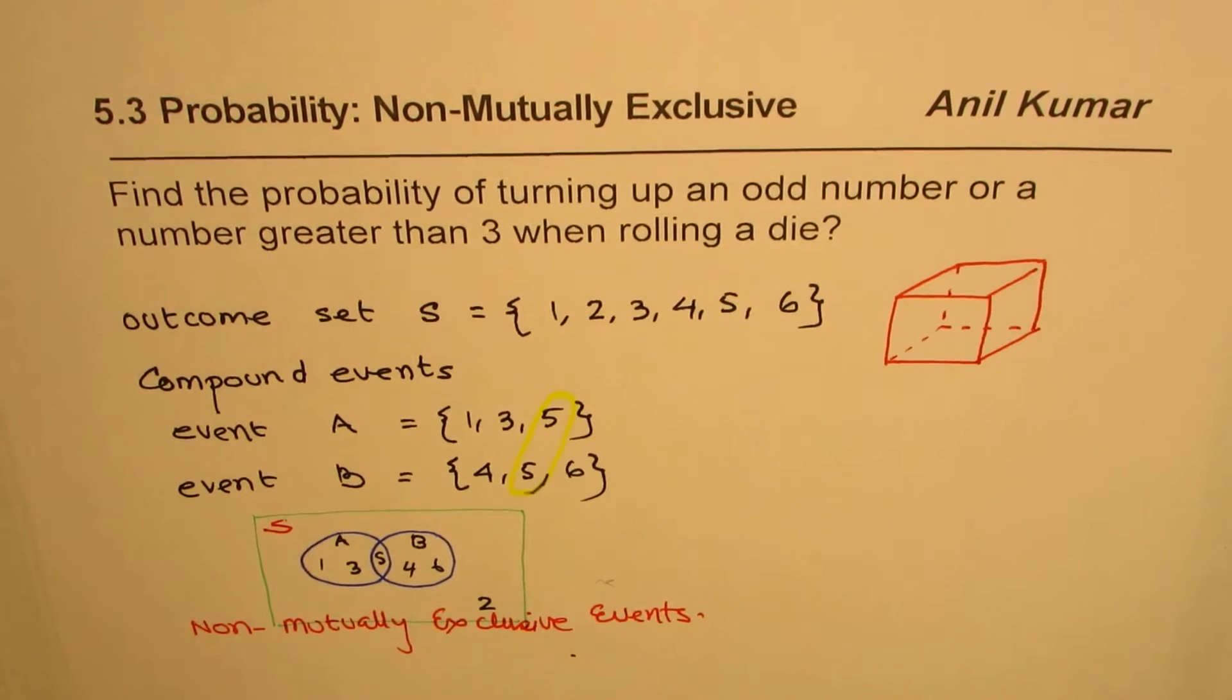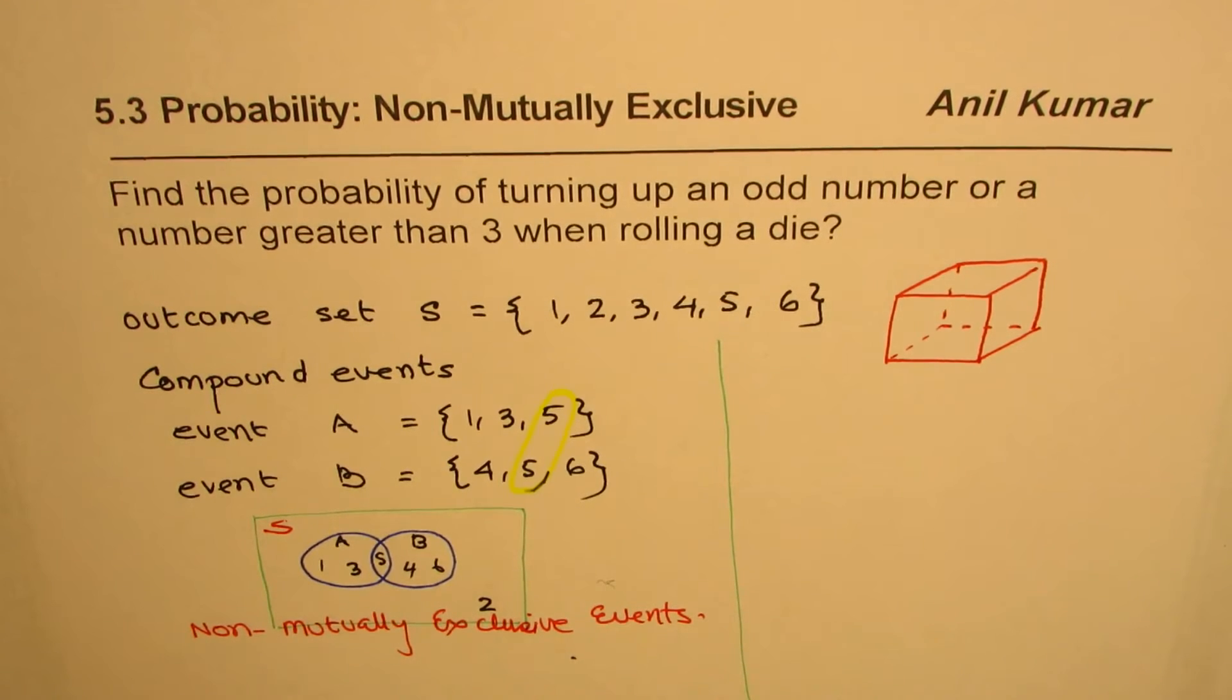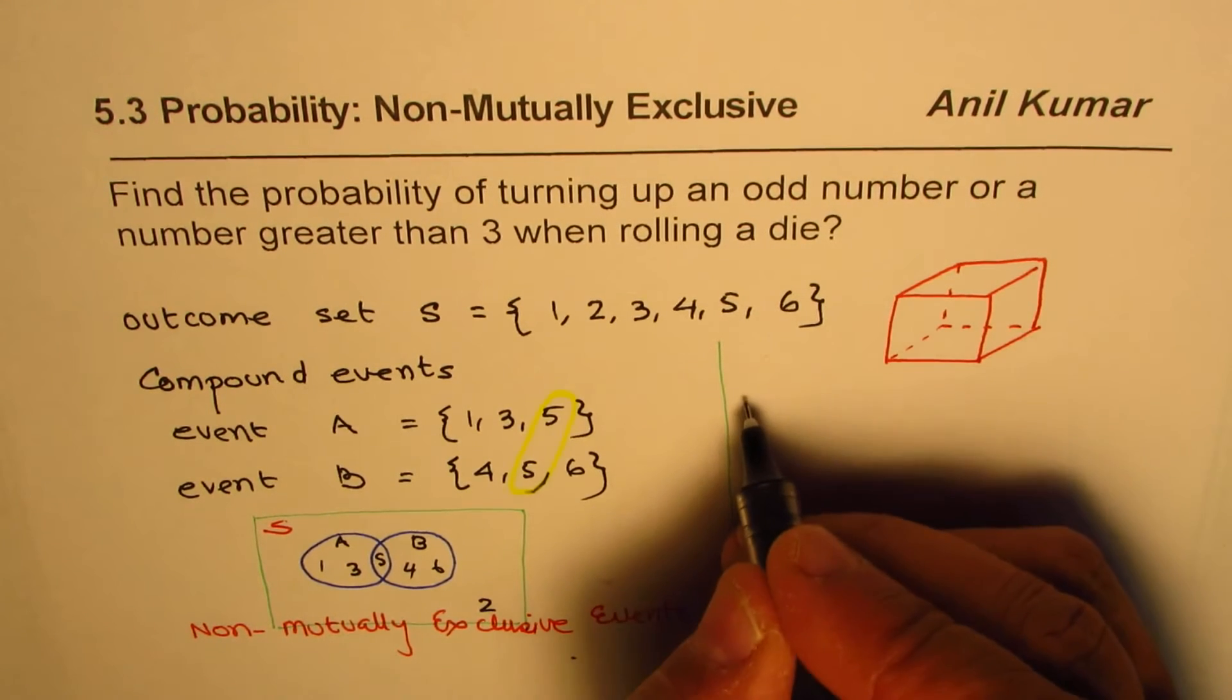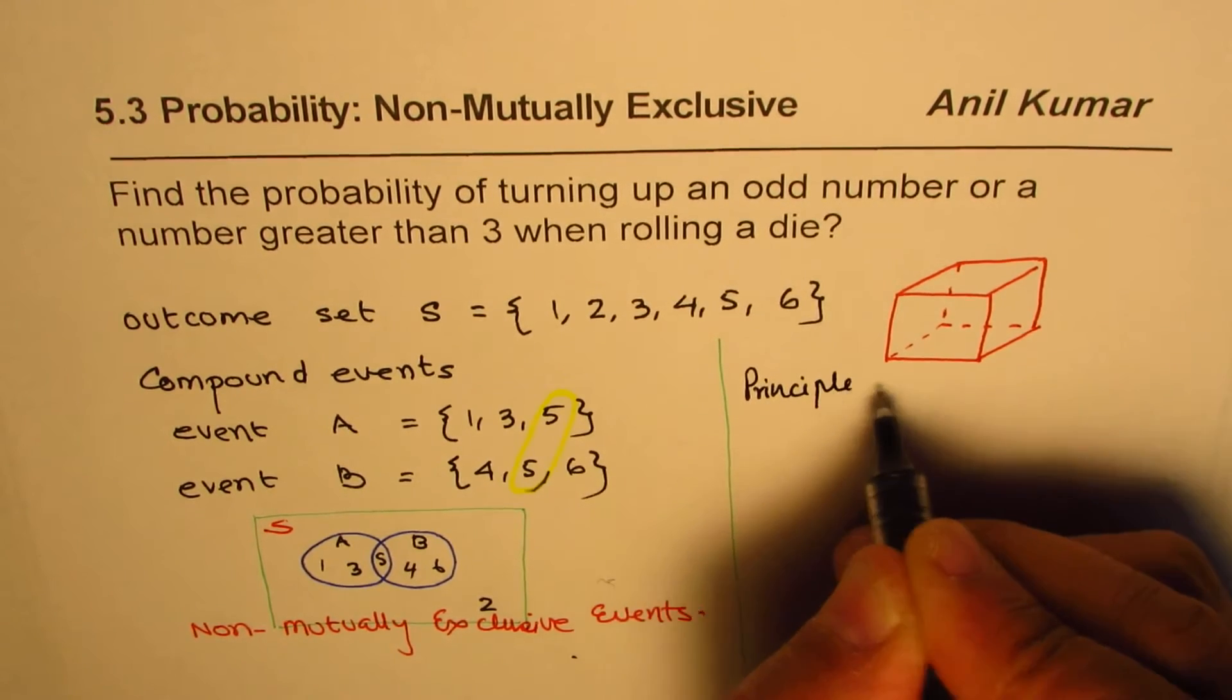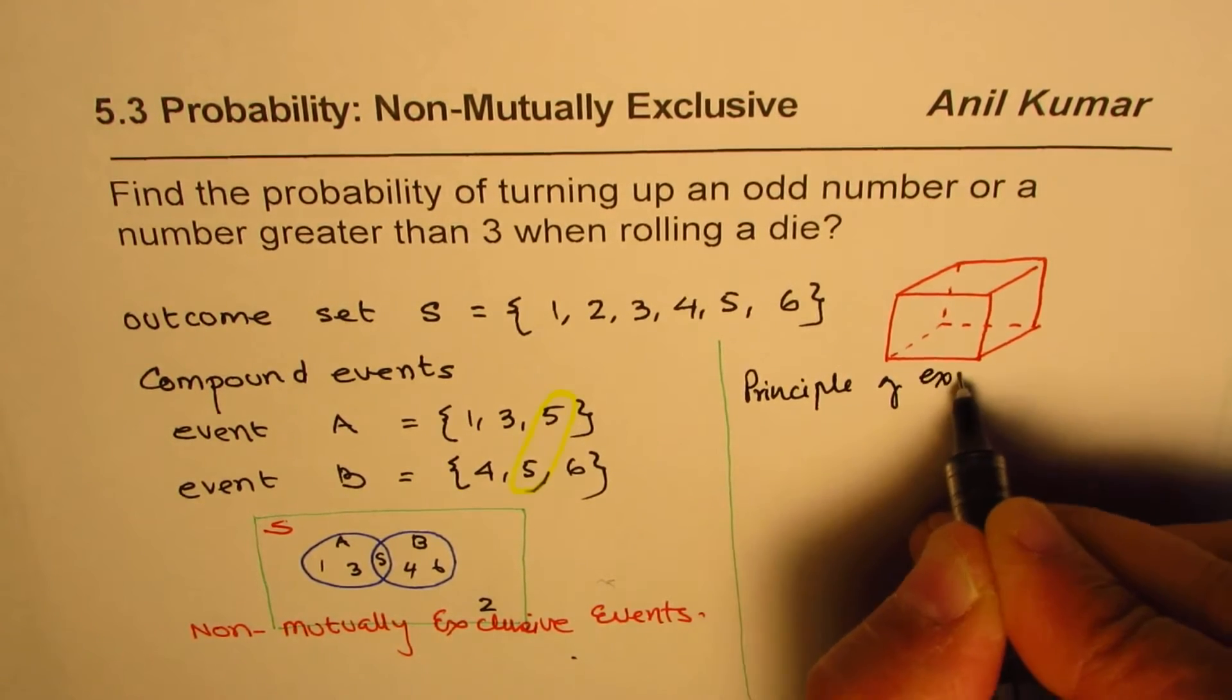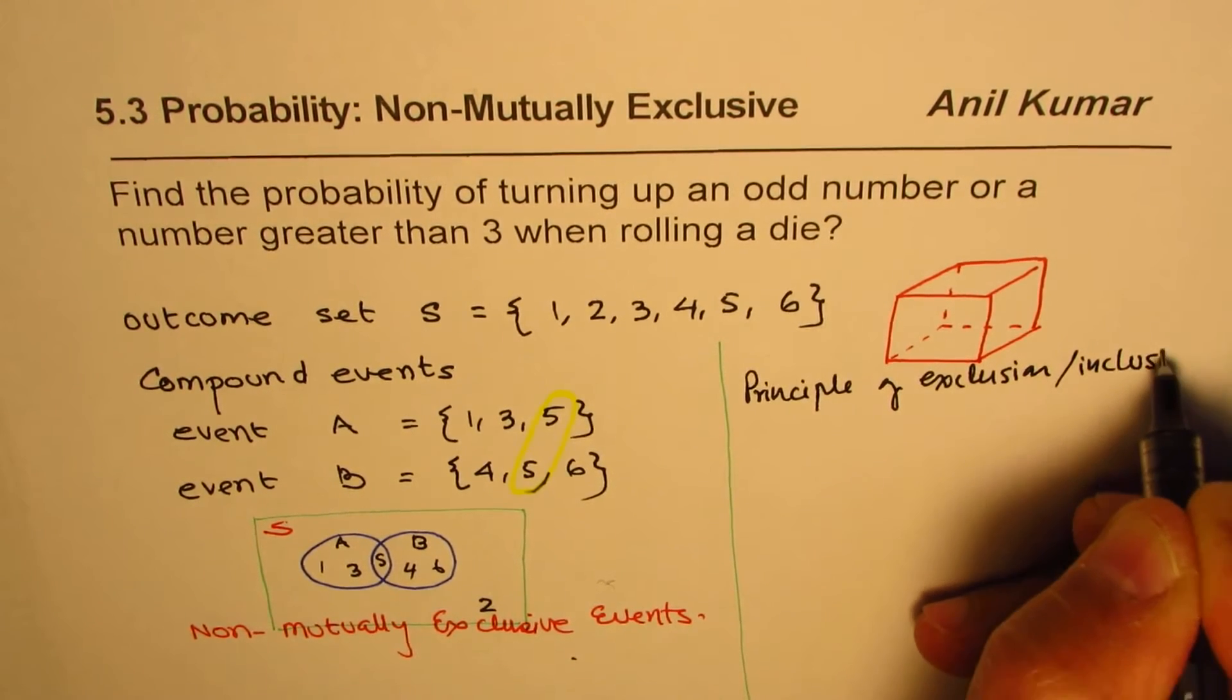So we can write non-mutually exclusive events. Is it okay? Now whenever such is a case, we have to apply the principle of inclusion and exclusion, right? So that reminds us, principle of exclusion and inclusion, right? Okay.